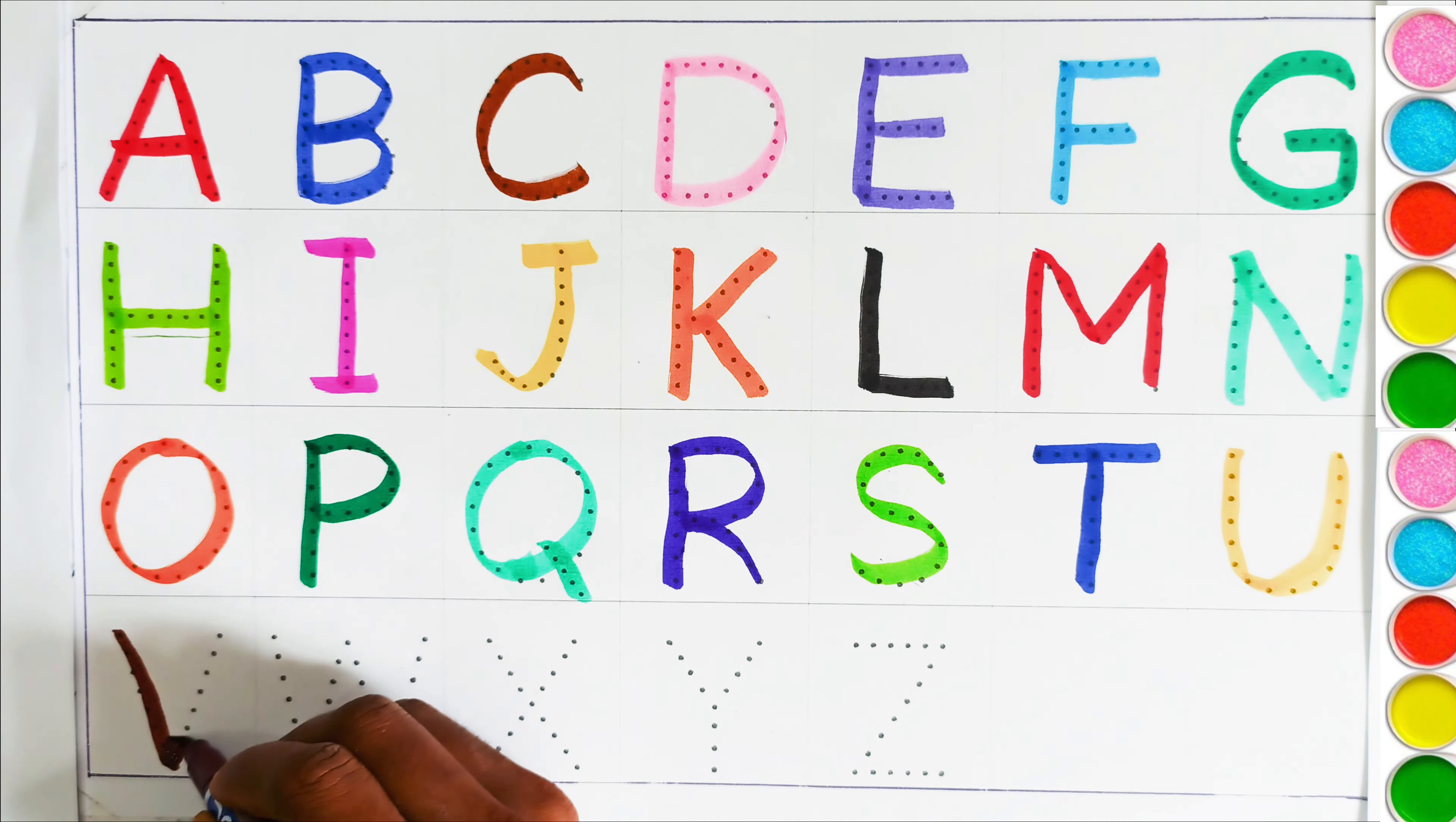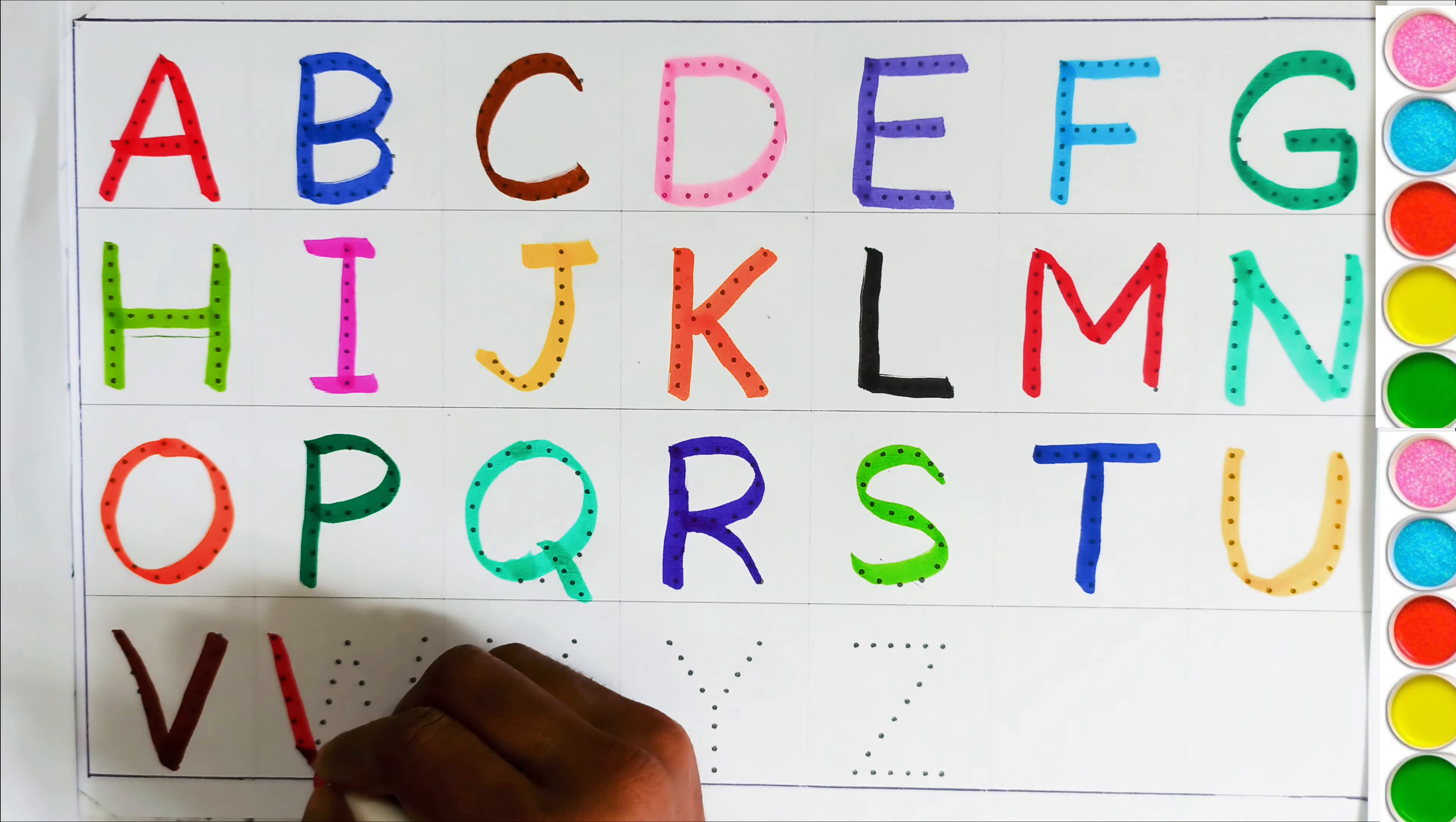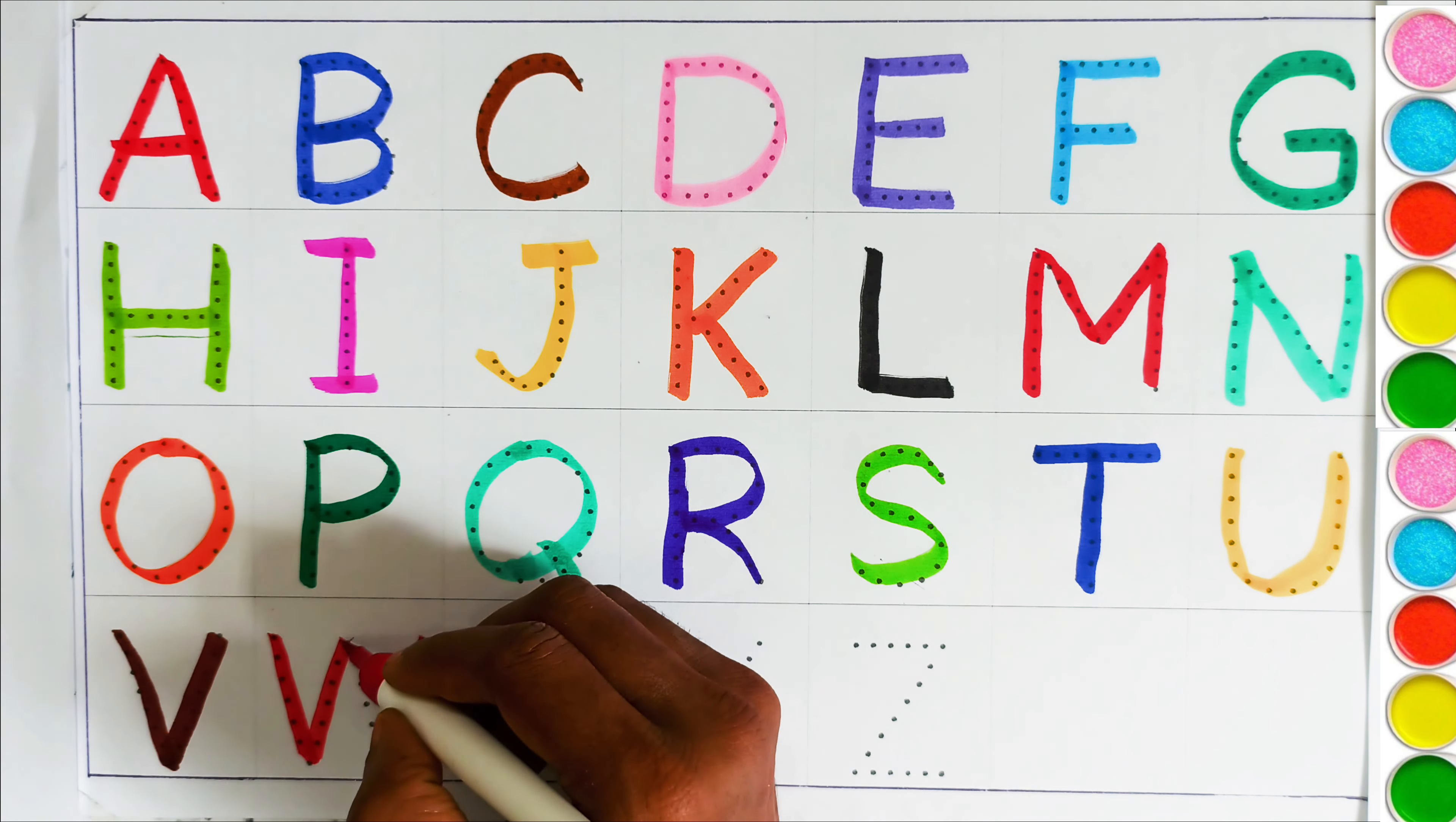This is yellow color. Y, Y for umbrella. This is brown color. V, V for vyan.